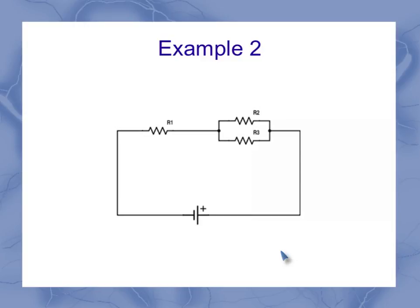And here's another example. If I look between these two purple dots, I've got one path and another path. It splits apart at one place and comes back together at the other place. So this is a parallel section, where now R2 and R3 are in parallel. R1 is not in parallel with them, so we'd have to come back and treat this part separately.